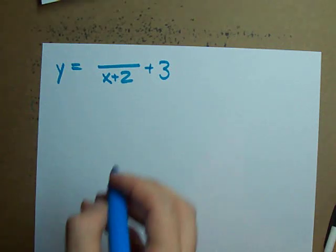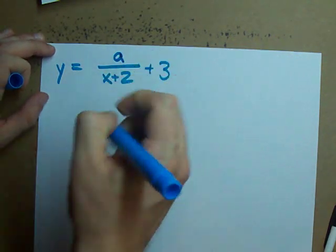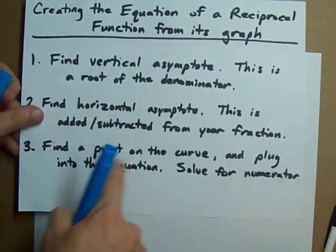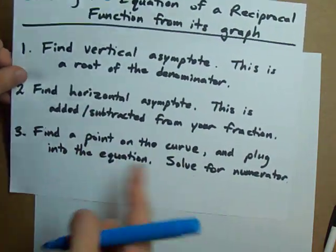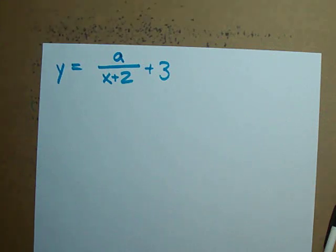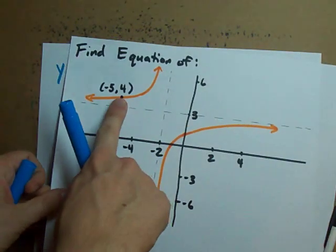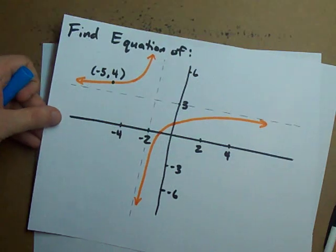The only other thing you have to do is solve for this numerator, which I'm going to call a. We do that by finding a point on the curve, plugging it in, and solving. I've made that easy for you too. Look, the point negative five, four is on it.